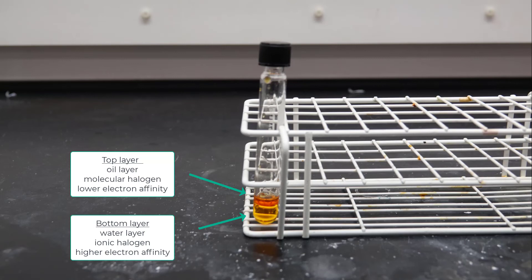After you've completed all your possible combinations, you should have six total combinations, six total test tubes. You don't have to combine, for example, molecular iodine with ionic iodine, you just need to combine the different halogens together. You should be able to draw conclusions about which one has the highest, the middle, and the lowest electron affinity for each of these elements.